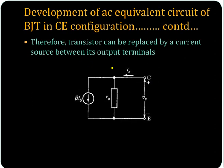So the transistor can be replaced by a current source between its output terminals. R0 represents the dynamic output resistance of the transistor. Its value is very high, in the range of 40 kilo ohm.